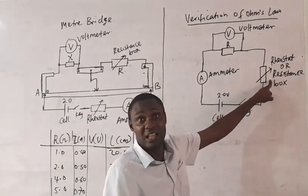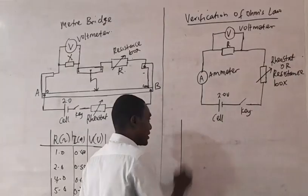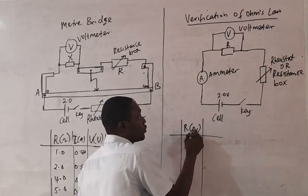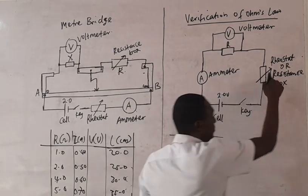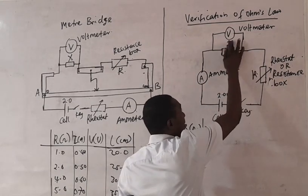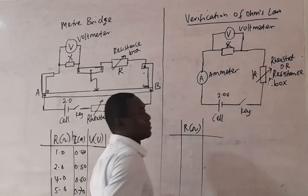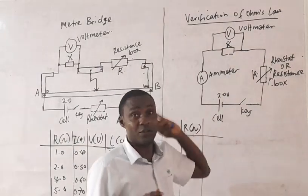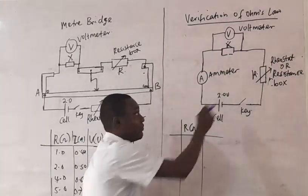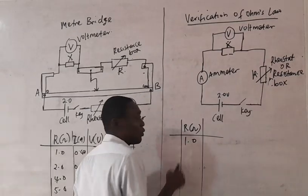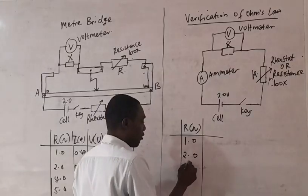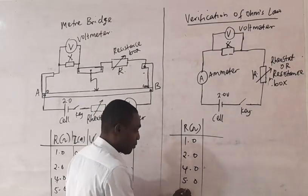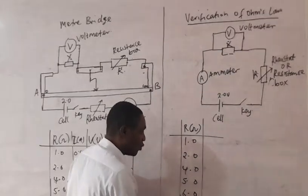If you are using the resistant box, you are going to be told to set the resistance values to different levels. The resistant value R in ohms — the resistant box is going to be represented by R. You may be asked to set the resistant box to 1.0 ohms, 2.0 ohms, 4.0 ohms, 5.0 ohms, 6.0 ohms, 8.0 ohms — it could be higher values.